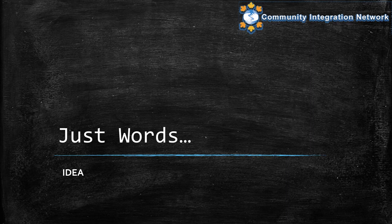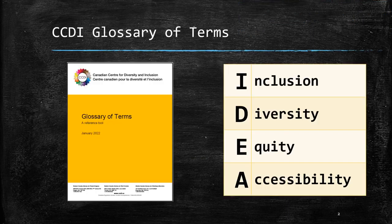Welcome to Just Words. Today's word is IDEA — well, actually the acronym IDEA. IDEA stands for Inclusion, Diversity, Equity, Accessibility. We'll look at definitions for each of those terms using the Canadian Centre for Diversity and Inclusion CCDI's Glossary of Terms, which can be found online on the CCDI website.